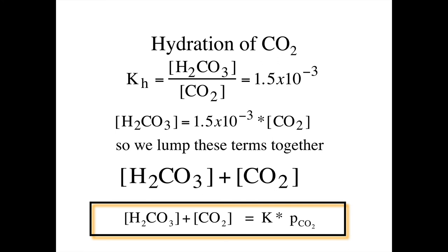There's no proton transfer in this reaction. That allows us to write carbonic acid plus CO2 in terms of a K* and the partial pressure of CO2. This is an algebraic convenience that allows us to focus on carbonic acid as the only form of CO2.